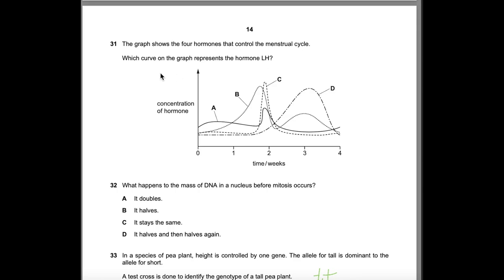Question 31: The graph shows the four hormones controlling the menstrual cycle. Which curve represents LH? Progesterone is curve D and estrogen is the other identified curve. Curve B represents another hormone, and curve L is FSH. LH stimulates ovulation; at ovulation, estrogen levels drop sharply because the ovum bursts and less estrogen is produced. What remains is curve C. Answer: C.